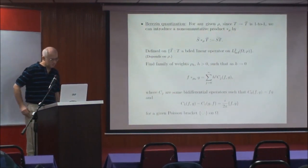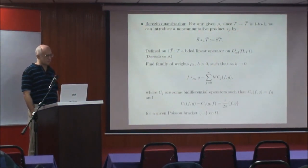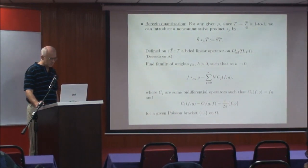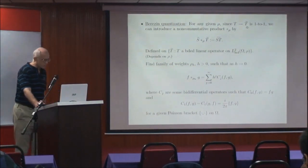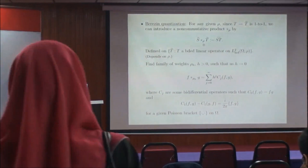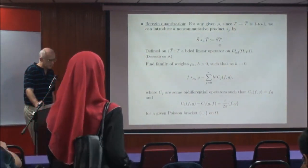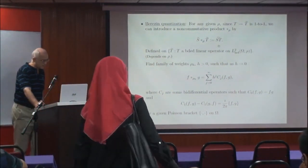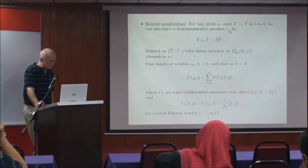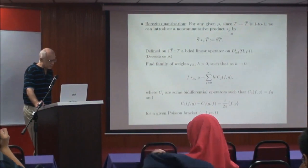The second approach was Berezin quantization, which was constructed using the Berezin symbol of operators. So for each operator T on the Bergman space, we have this Berezin symbol — the twiddle — which is a one-to-one correspondence. It will be a function, and we define the product of these functions by transferring the operator multiplication. Again, this depends on the weight, which relates to the construction of the weight in the Bergman space.